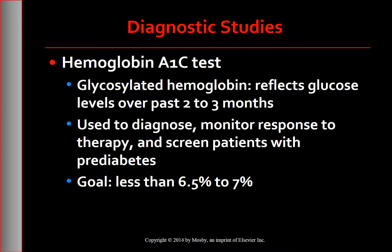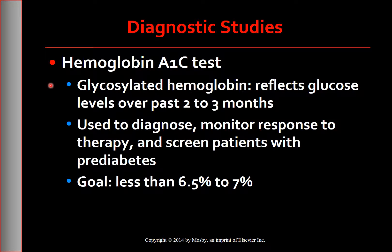The hemoglobin A1c reflects the amount of glycosylated hemoglobin as a percentage of total hemoglobin. For example, a hemoglobin A1c of 6.5% means that 6.5% of the total hemoglobin has glucose attached to it. The amount of hemoglobin that is glycosylated depends on the blood glucose level. When blood glucose levels are elevated over time, the amount of glucose attached to hemoglobin molecules increases.